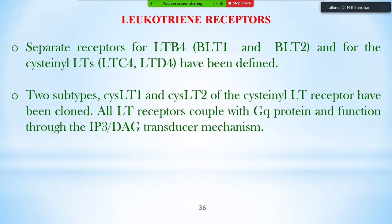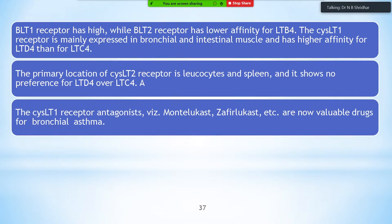Leukotriene receptors function through the inositol triphosphate and diacylglycerol transducer mechanism. BLT1 has high affinity for LTB4 while BLT2 has lower affinity. The CysLT1 receptor is mainly expressed in bronchial and intestinal smooth muscle and has affinity for LTD4 and LTC4. The CysLT2 receptor is primarily located in leukocytes and spleen and shows no preference between LTB4 and LTC4.